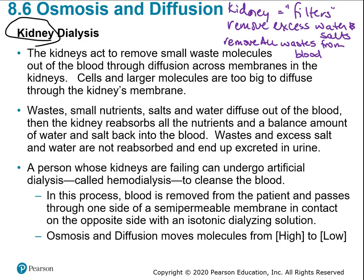Inside the kidney are microscopic filters called nephrons. The kidney is the big structure, but the actual filters inside are the nephrons. This is why if you see a nephrologist — a doctor that studies kidney function and filtration — they're actually identifying these individual microscopic filters. One kidney has about one million nephrons.